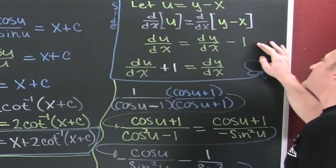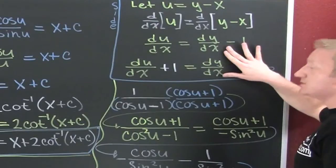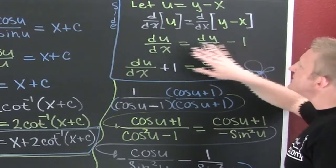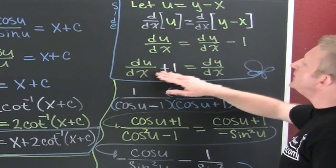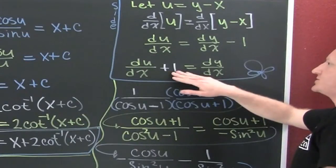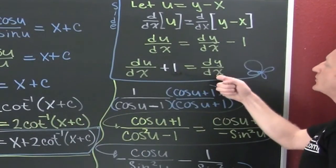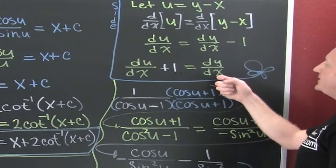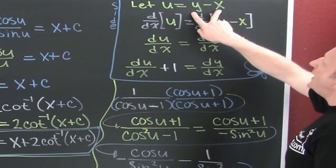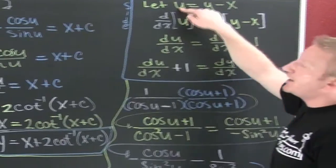I want to solve this guy for dy. So I have du/dx plus one equals dy/dx. I'm going to go through and I want to change these guys. I want to replace dy/dx with this guy and I want to replace x minus y with that guy.